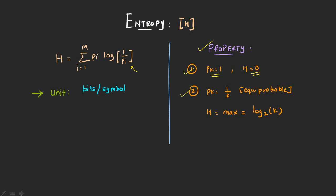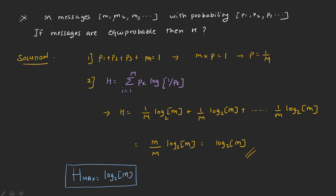The second point — take special care — is where pk is given as 1 by k, which means it is equi-probable. If all of the messages have equal probability of occurrence, then my entropy is equal to the maximum value, and that value would be log to the base 2 of k. Let me take the derivation as well to show how this value comes.